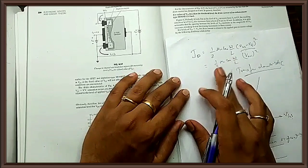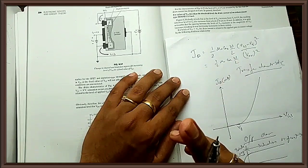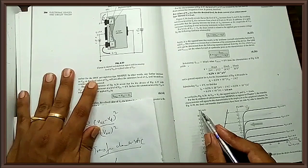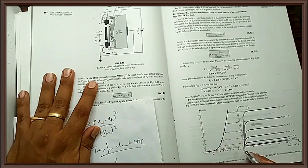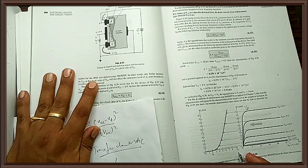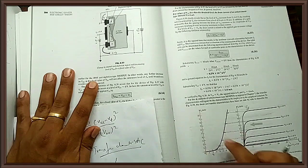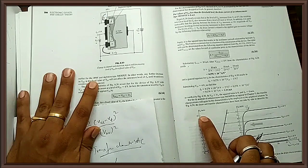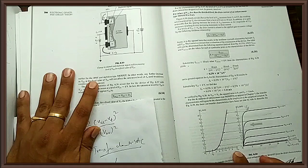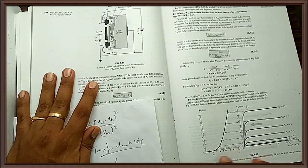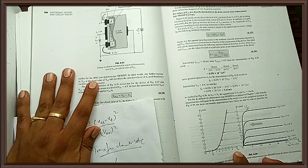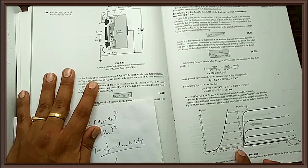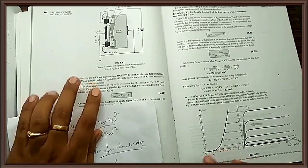The MOSFET is called a voltage control device, whereas the BJT transistor is called a current control device. In the MOSFET, output current ID is controlled by input voltage VGS. In the BJT, the transfer characteristic is IC versus IB — collector current is controlled by base current, which is a current input. Here the input is a voltage, so the MOSFET is a voltage control device.